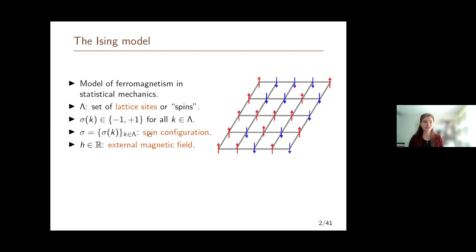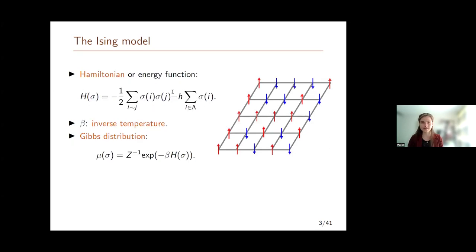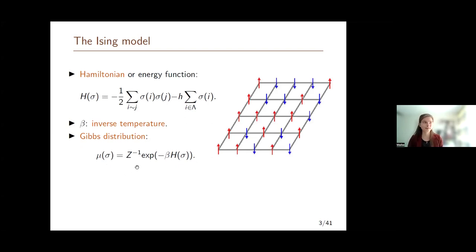There can also be a magnetic field imposed on the lattice. We assume this magnetic field is constant for each of the spins, and this constant we call h. Each of these configurations has a certain energy, given by the following function called the Hamiltonian. As you can see, the first summation ranges over all neighboring spins. Configurations in which spins are aligned with their neighbors and with the magnetic field have a lower energy. The probability that you find some configuration sigma is given by the Gibbs distribution. Z is just a normalizing factor. Beta is a positive parameter called the inverse temperature, and H is the Hamiltonian we saw before. Configurations with lower energy have a higher probability of occurring.